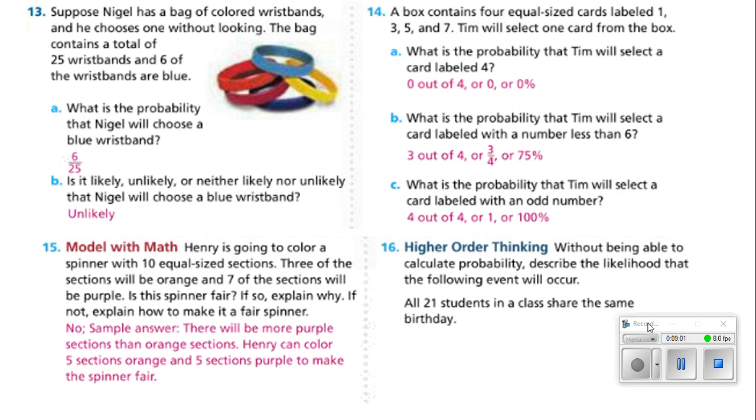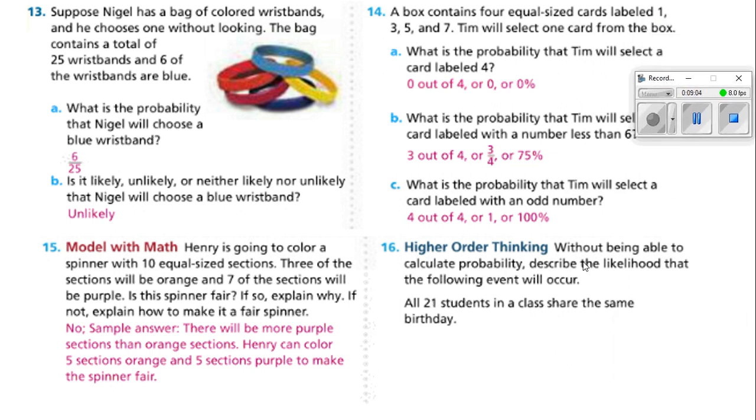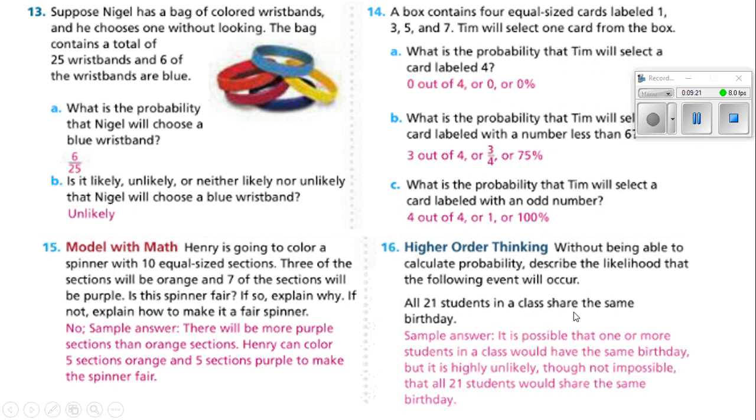Number 16. Without being able to calculate probability, describe the likelihood that the following event will occur. All 21 students in a class share the same birthday. Well, what is the likelihood of that? So, it is possible that one or more students in a class would have the same birthday, but it is highly unlikely, though not impossible, that all 21 students would share the same birthday.